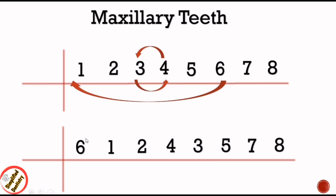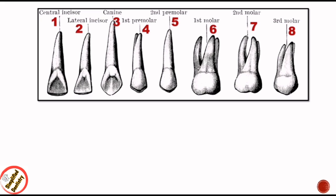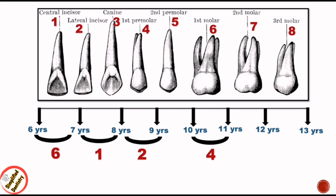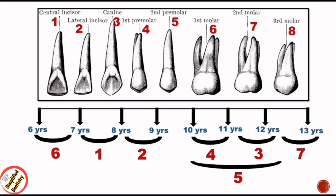Note that the position of 3 and 5 can also interchange. Form a timeline from 6 years to 13 years and place the eruption sequence 6-1-2-4-3-5-7 between each year: 6 between 6–7 years, 1 between 7–8 years, 2 between 8–9 years, skip 9–10 years, 4 between 10–11 years, 3 between 11–12 years, and 5 between 10–12 years. This is why 3 and 5 can interchange — either may erupt first.